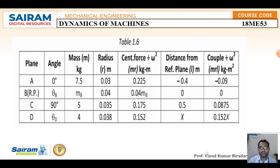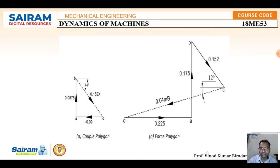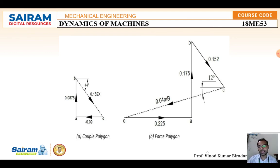Once the tabular column is formed, construct the couple polygon diagram using the last column values. For 0 to A: length 0.09 in the negative direction. For A to B: 0.0875 at 90 degrees. The closing vector B to O is unknown — close it with a dotted line. Use a suitable scale (e.g., 1 cm = 1 unit) to make the drawing practical.